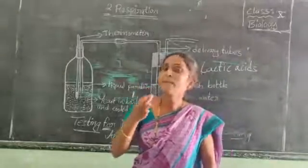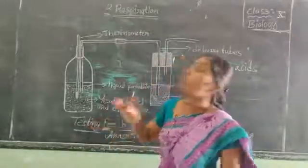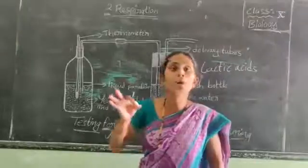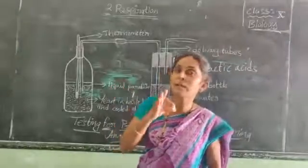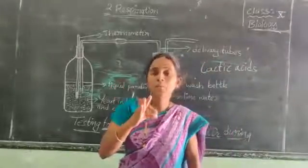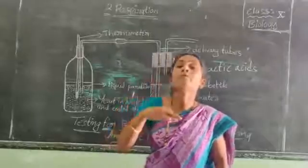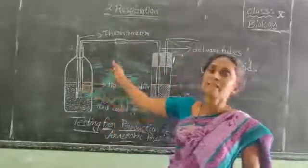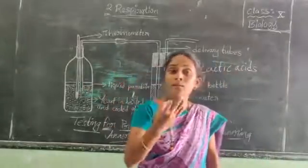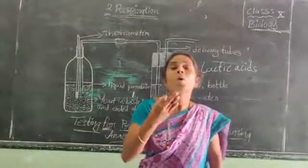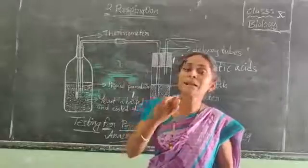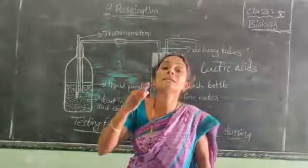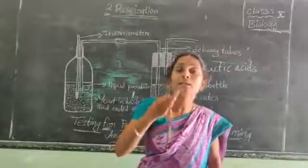I will explain by conducting an activity. During anaerobic conditions, the yeast cells can produce ethanol, carbon dioxide, and heat. Before starting the activity, we have to follow some rules. The first is the aim — what we want to prove. The aim is: to prove the release of carbon dioxide and heat during anaerobic respiration in yeast cells.